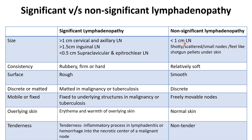Non-significant lymph nodes are less than 1 cm in size — they are shotty, scattered, small nodes that feel like shotgun pellets. Regarding consistency: in pathological conditions it is rubbery, firm, or hard; sometimes soft also. In non-significant, it is relatively soft.